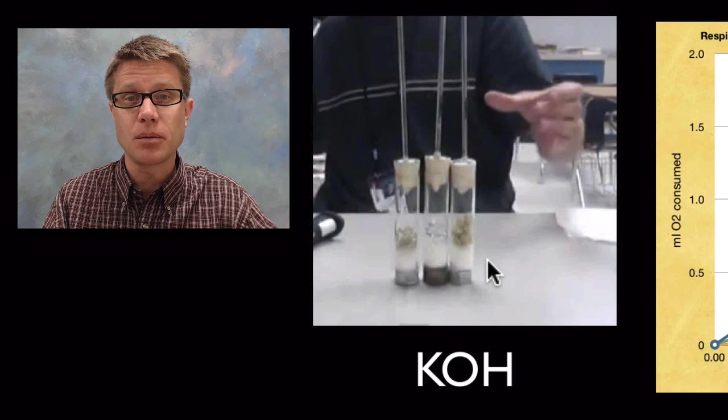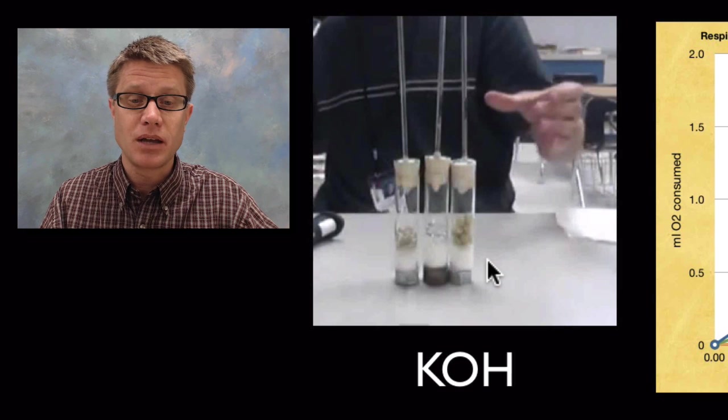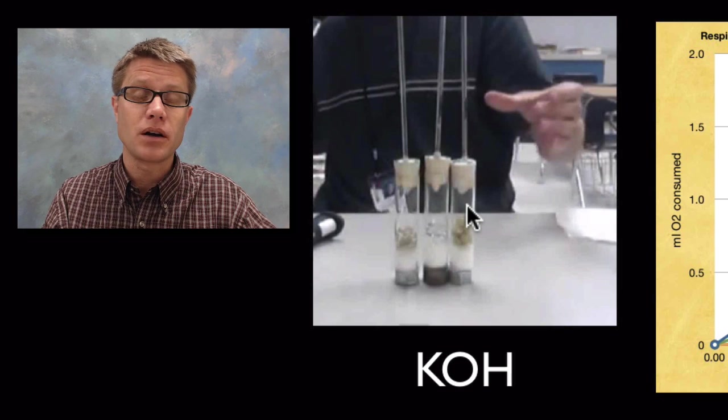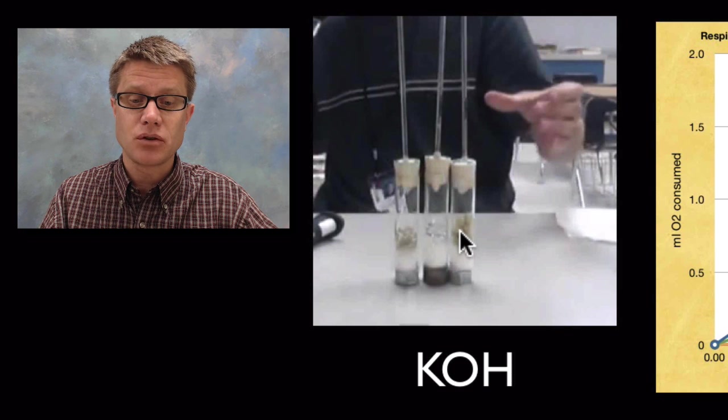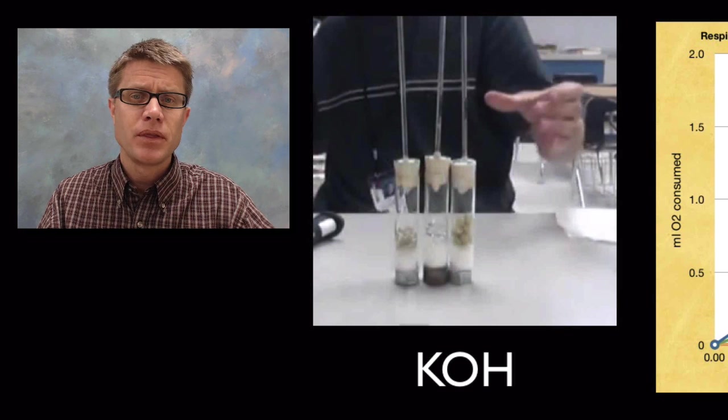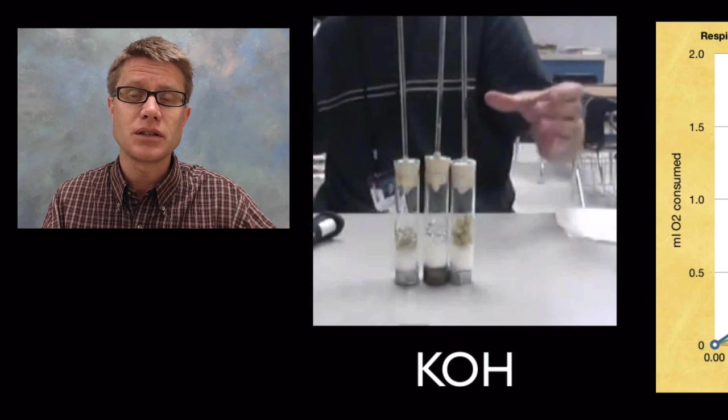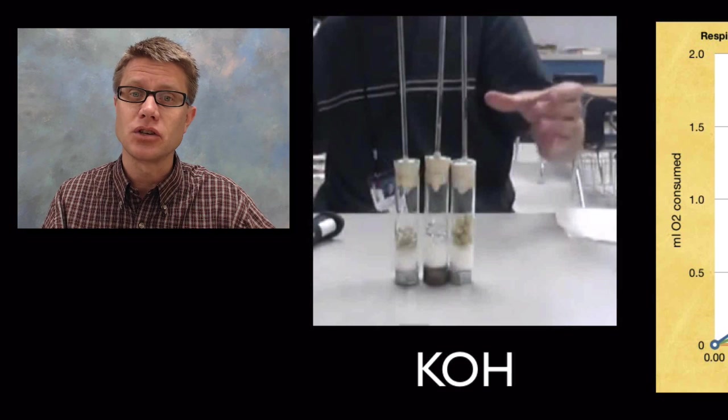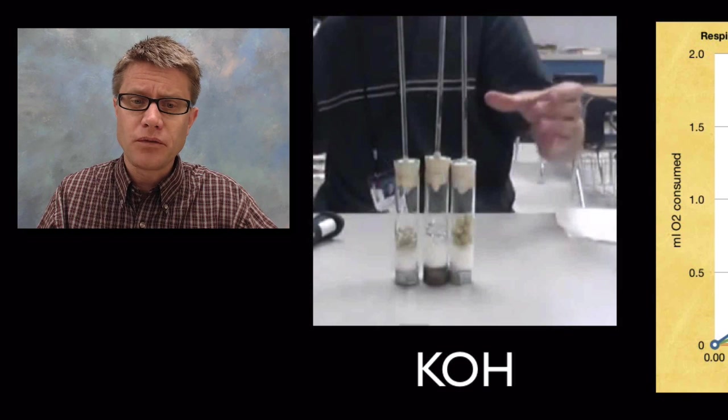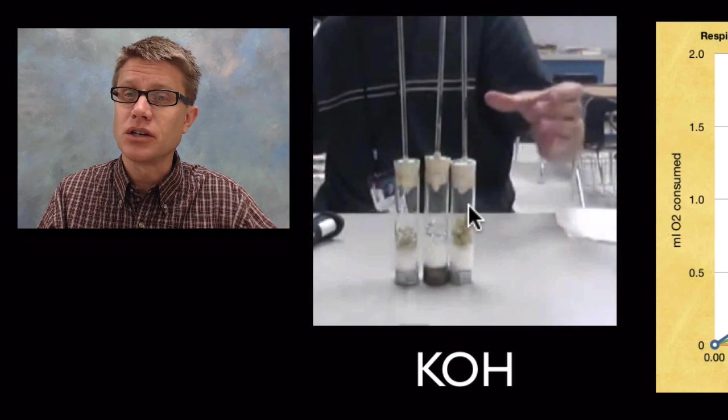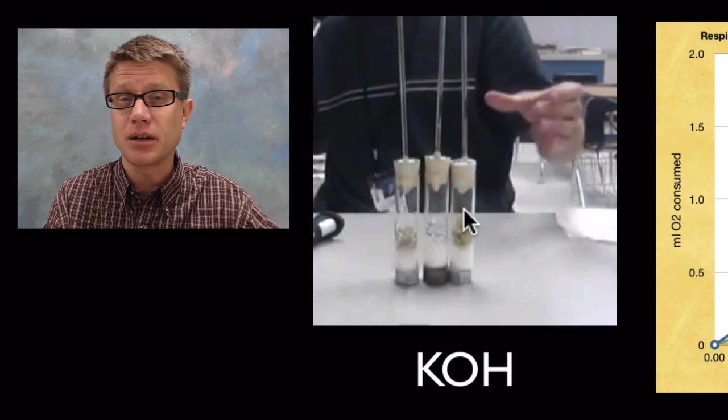Potassium hydroxide will grab any carbon dioxide that's loose and turn it into a solid. What's going to happen as this thing is laid down in water is that any organism inside it—you could use germinating peas or we use worms in class—they're going to do respiration. They're going to use the food or nutrients inside their body and take in oxygen to create energy, ATP. What you'll find is as they consume the oxygen inside the respirometer, they produce an equal amount of carbon dioxide, but that quickly becomes a solid.